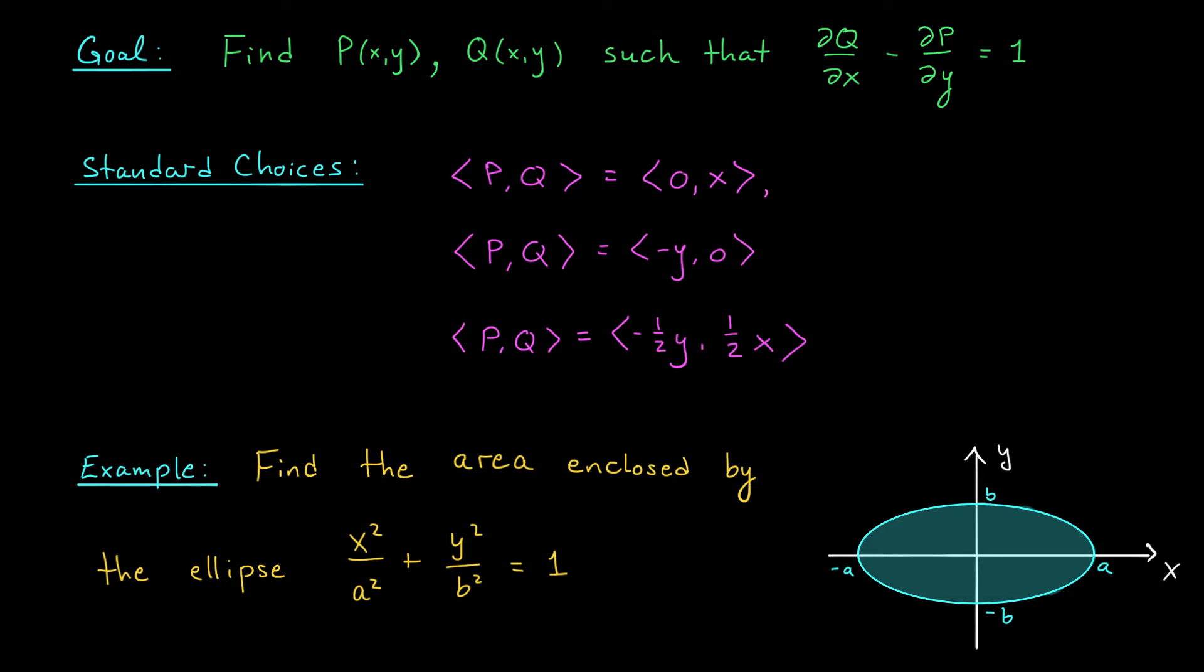The takeaway here is that when using Green's theorem to compute areas, you can choose any one of these vector fields as your PQ, or you can find something else. As long as this equation is satisfied, you can convert the double integral of 1 to a line integral involving P and Q. Let's see how all this works in an example.